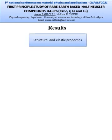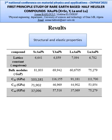In this section, we present the results that we obtained. To define the lattice constant, we perform an energy minimization. The lattice constant, bulk modulus, and elastic constants are regrouped in the table. The elastic study shows that C11 and C44 are positive, and C11 minus C12 is positive also, which means that the compounds satisfy the mechanical stability criteria.